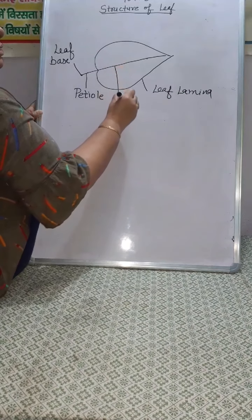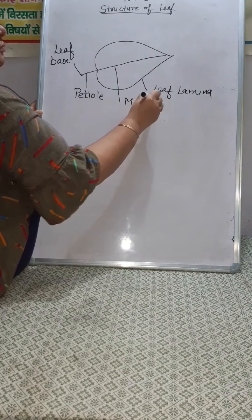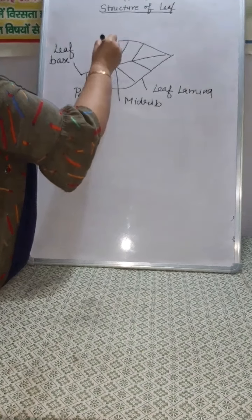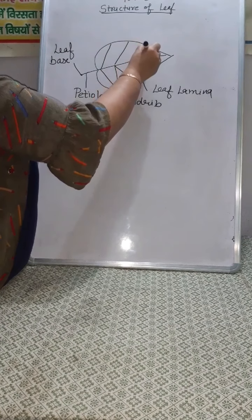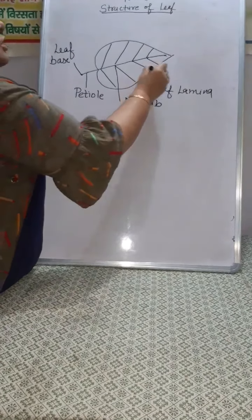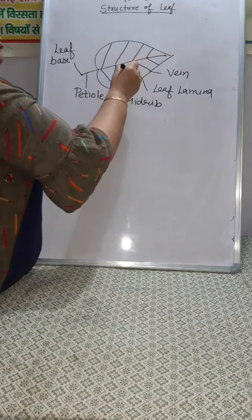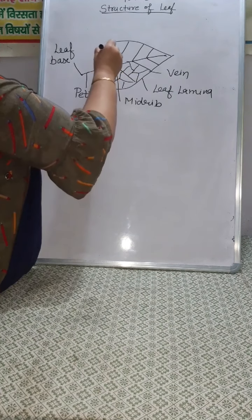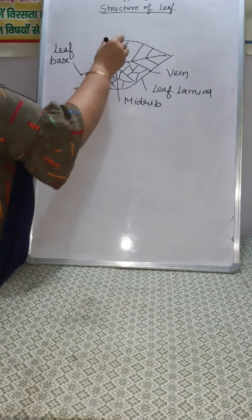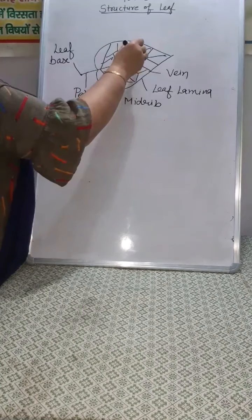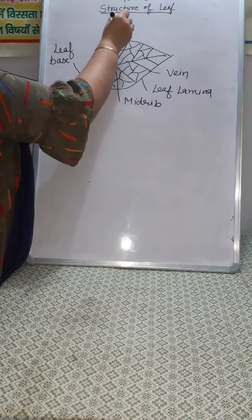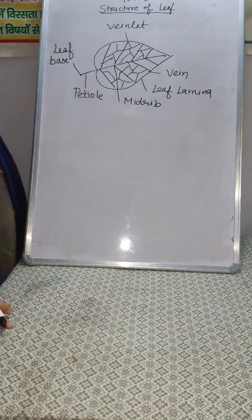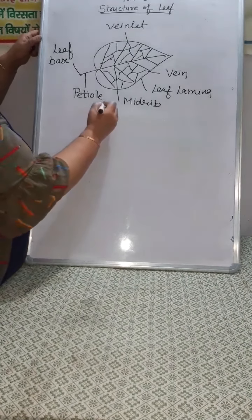This is the midrib and its branches. These are called veins. These veins form a network which is present here, and that is called the reticular network. These are veinlets. All these veins and veinlets contain vascular bundles, which are made up of xylem and phloem. This is the whole structure of the leaf.